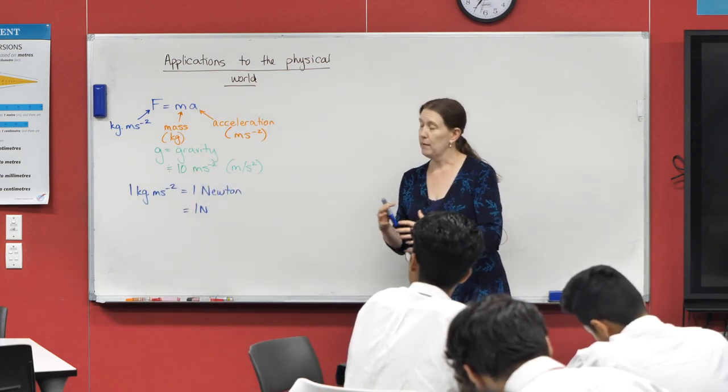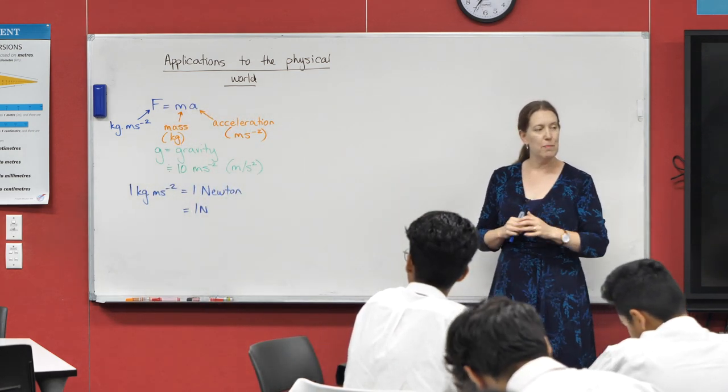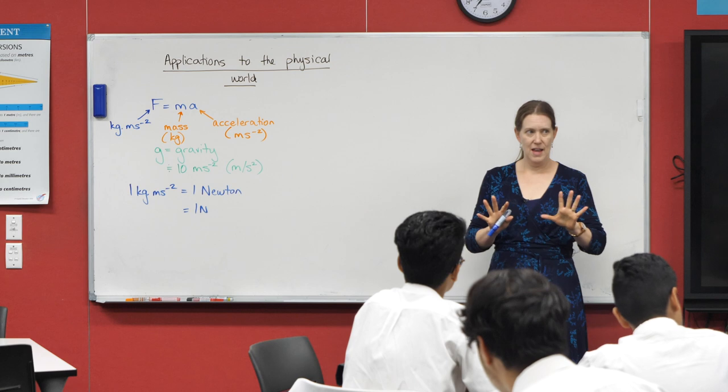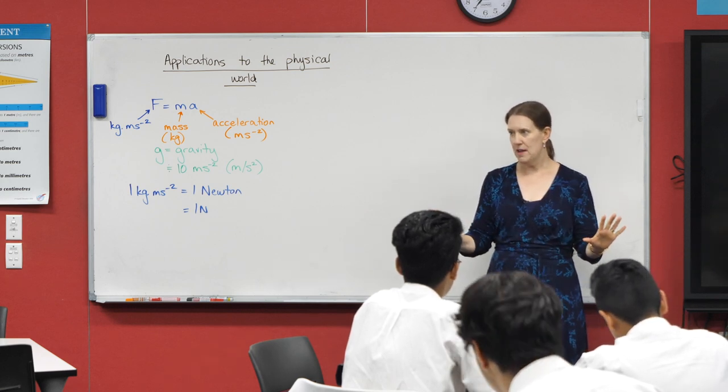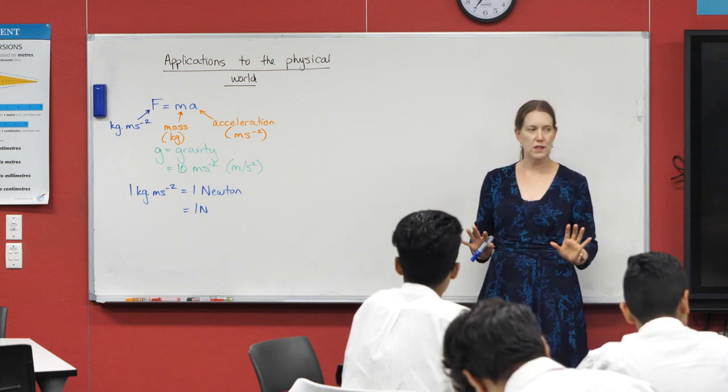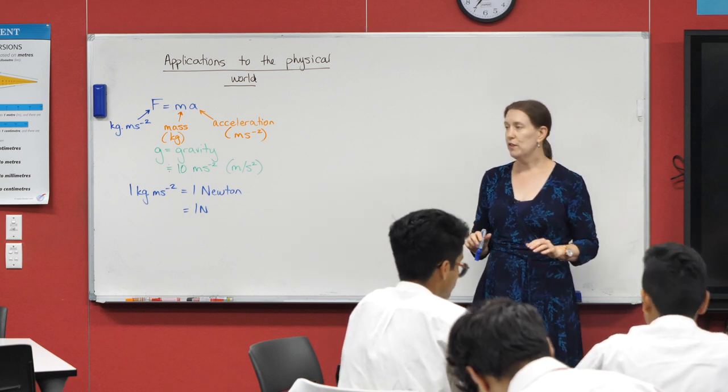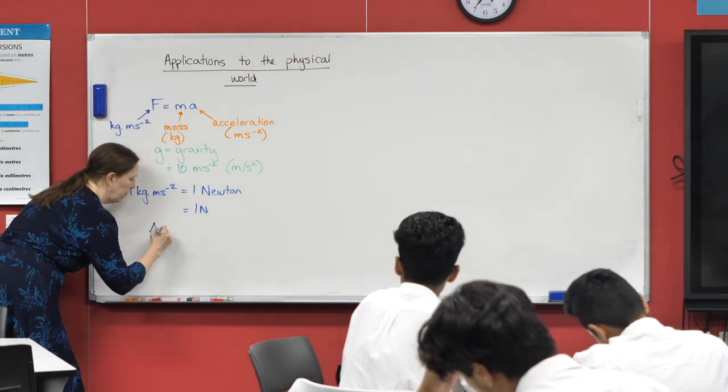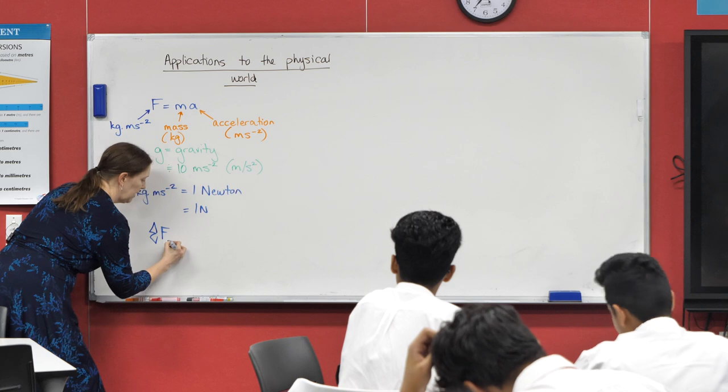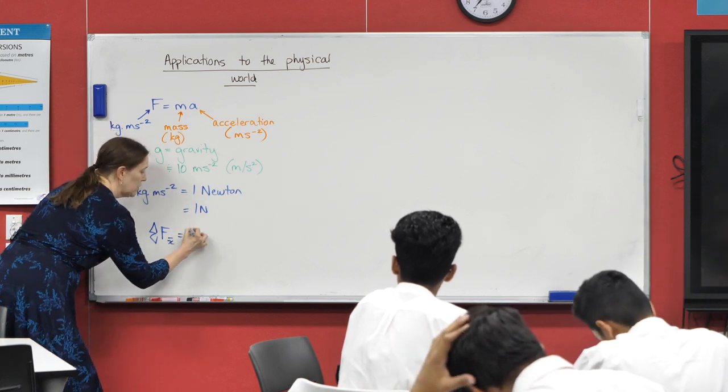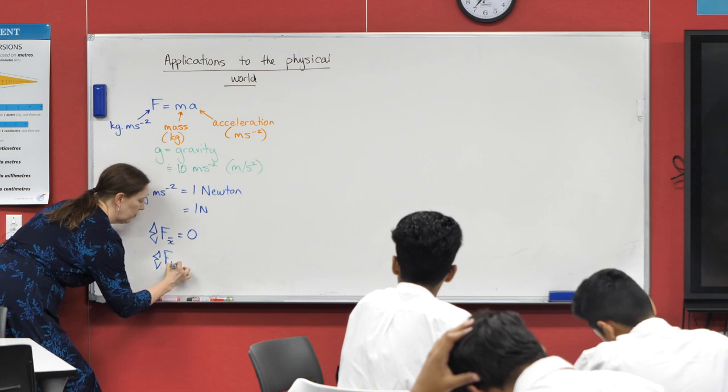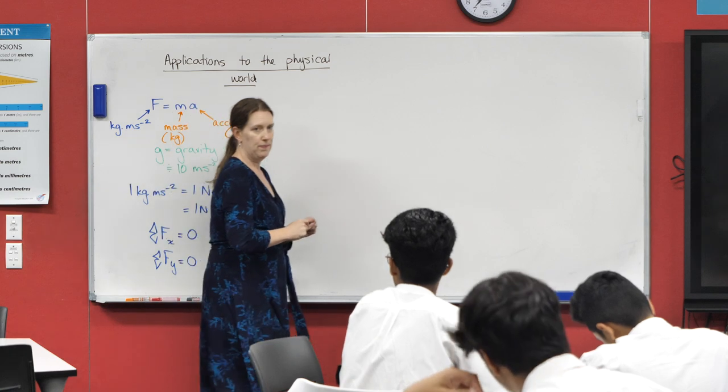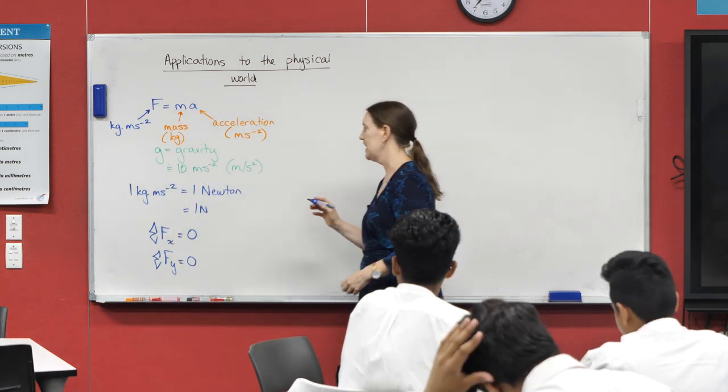The next big thing that we need to know in our very brief physics lesson is that if we are not moving, everything needs to be in equilibrium. That means all of our forces must balance. What that's going to look like for us is the sum of the forces, and I'm deliberately going to do this one in x and then another one in y. The sum of the forces in the y direction are both equal to zero if we are in equilibrium.